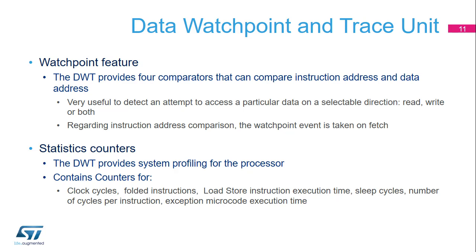For address matching, the comparator can use a mask, so it can match a range of addresses. On a successful match, the comparator generates a watchpoint debug event on either the PC value or the access data address. A match on a data value can be combined with an address match. The BPU is more appropriate for implementing instruction breakpoints, because the breakpoint event occurs when the instruction is about to enter the execute unit. So if the instruction which has been fetched is discarded due to a taken branch, the breakpoint event does not occur, while the watchpoint event does.